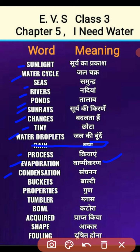Condensation matlab sanganan — bhaap ka thanda hokar paani ki chhoti chhoti boondon ke roop mein jam jaana, usko hum kehte hain sanganan. Buckets matlab balti. Properties matlab gun. Tumbler matlab glass. Bowl matlab katoraa. Acquired matlab prapt kiya. Shape matlab aakaar. Falling matlab neeche girna.